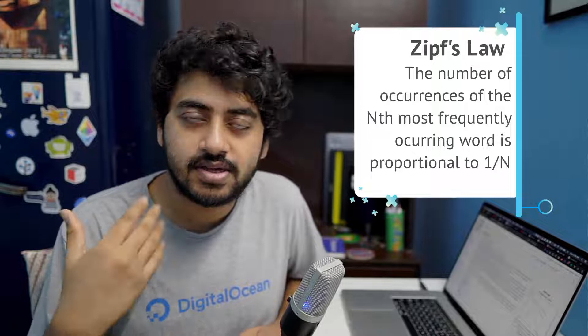Zipf's Law is an interesting law about linguistics and also about probability and statistics, which helps create a lot of compression algorithms for text compression in the computer science world. What Zipf's Law says is that the frequency of a word occurring in a large distribution of text is inversely proportional to its position in the frequency table. So if a word has a rank of n, the number of times it occurs is proportional to 1/n. So the word at rank 3 would occur one-third as many times as the word at rank 1.